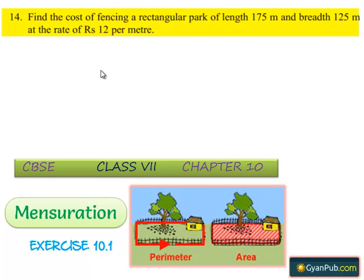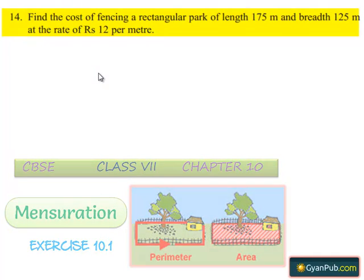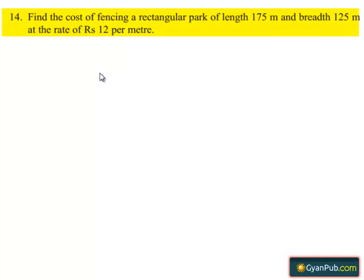Moving on to the next question. Given: find the cost of fencing a rectangular park of length 175 meters and breadth 125 meters at the rate of Rs 12 per meter. Let's do the solution.